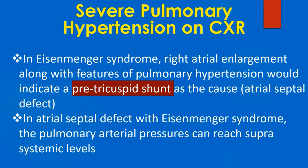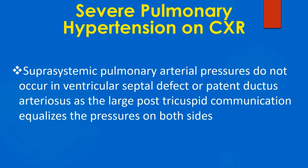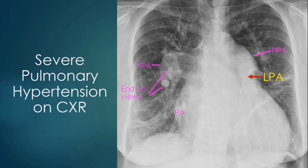In atrial septal defect with Eisenmenger syndrome, the pulmonary arterial pressures can reach suprasystemic levels. Suprasystemic pulmonary arterial pressures do not occur in ventricular septal defect or patent ductus arteriosus, as the large post-tricuspid communication equalises the pressures on both sides. Multiple fibrotic strands are seen in both lower zones, these being not typical of vascular markings.